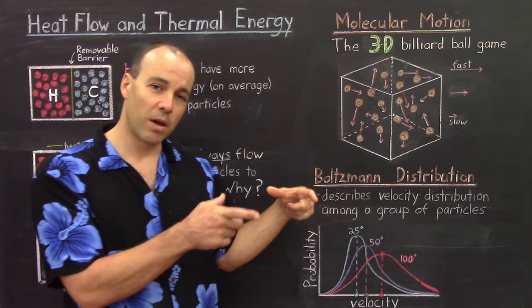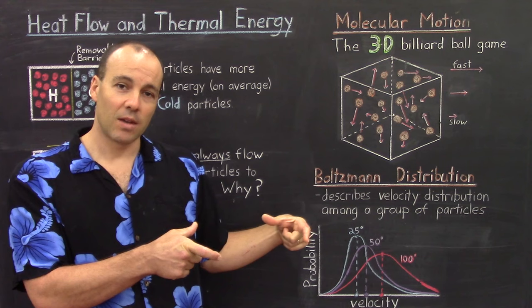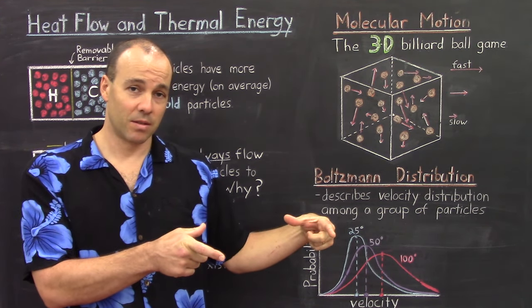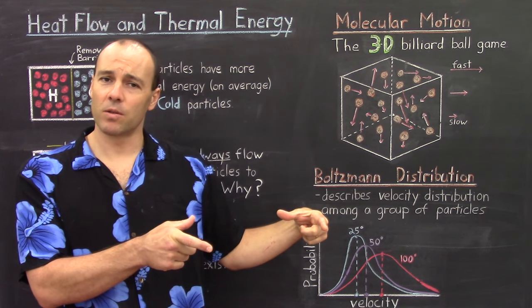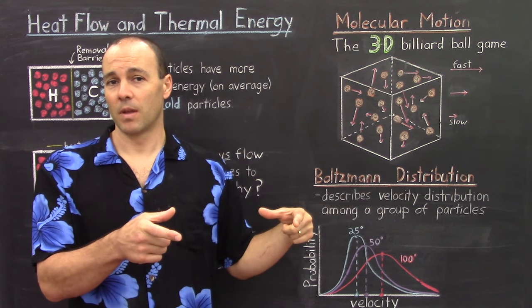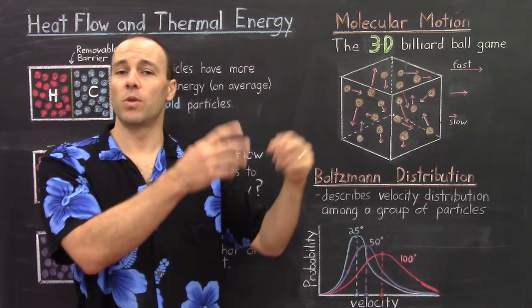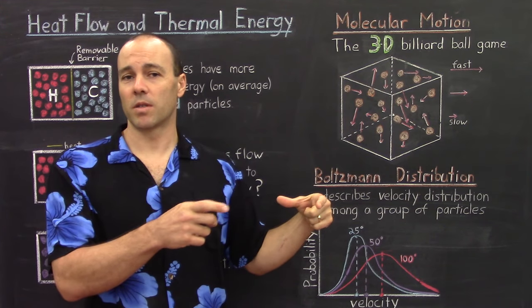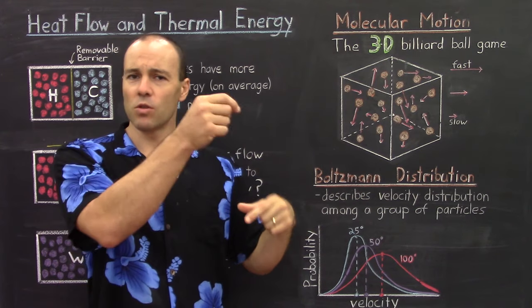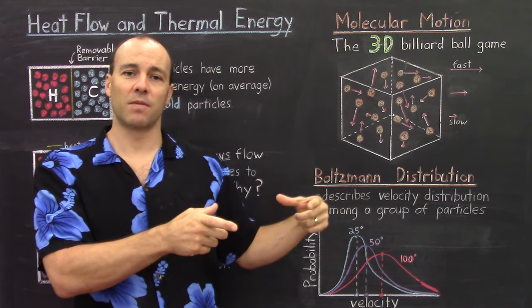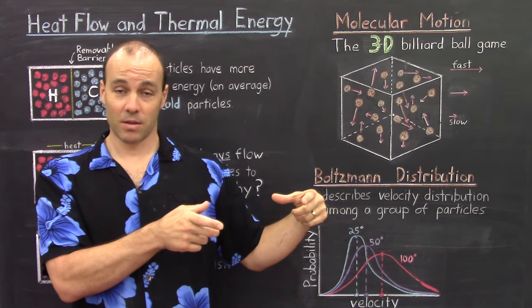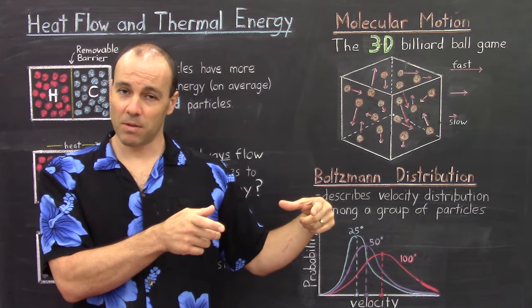So if you consider that puddle on the floor that's at room temperature — which is 25 degrees Celsius — there are some particles in that puddle that are moving more quickly than the others. They have sufficient molecular motion to escape the rest of the liquid particles, and they're going to be the ones to evaporate first. So once those particles escape into the gas phase, those slower-moving particles are still sitting in the puddle. So how do the rest of them evaporate as well?